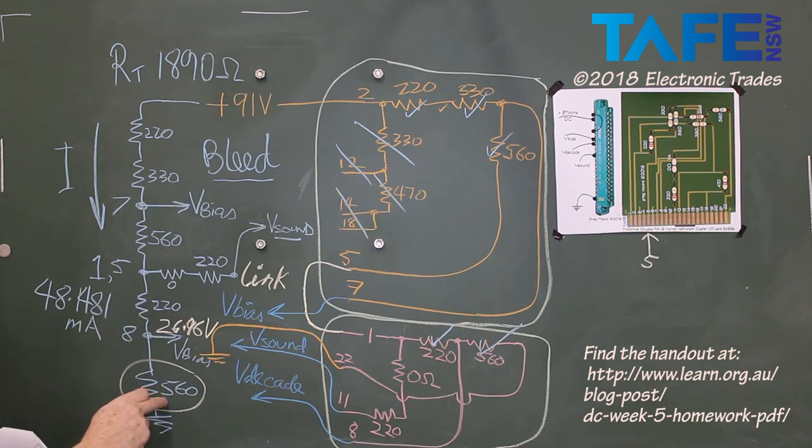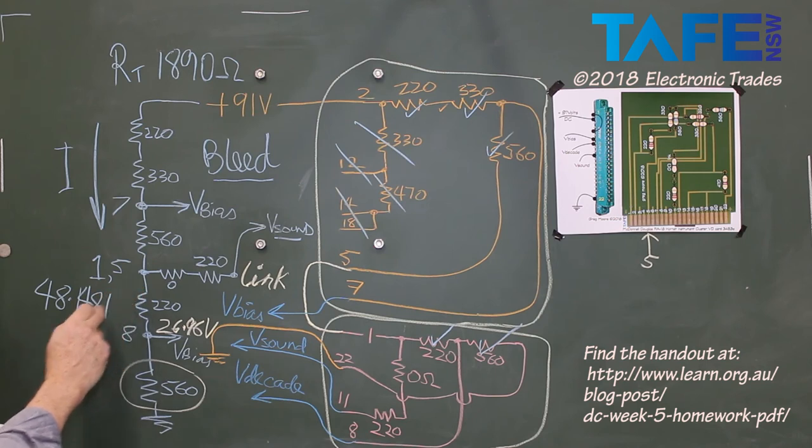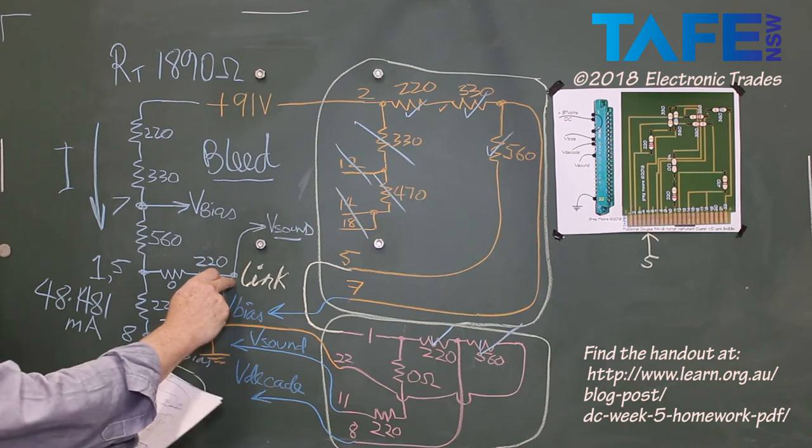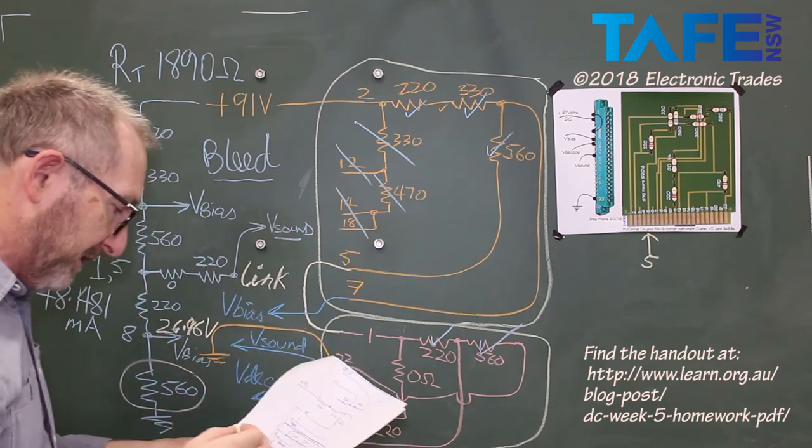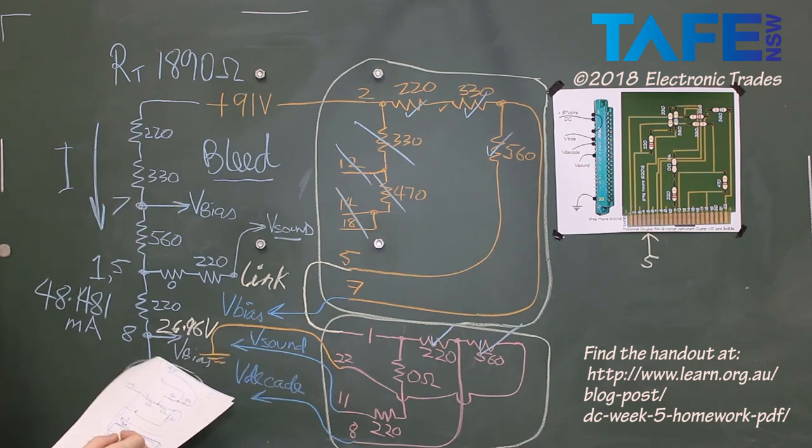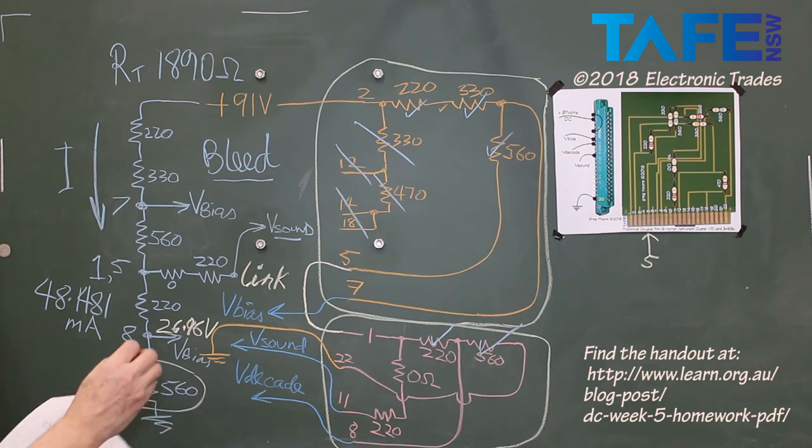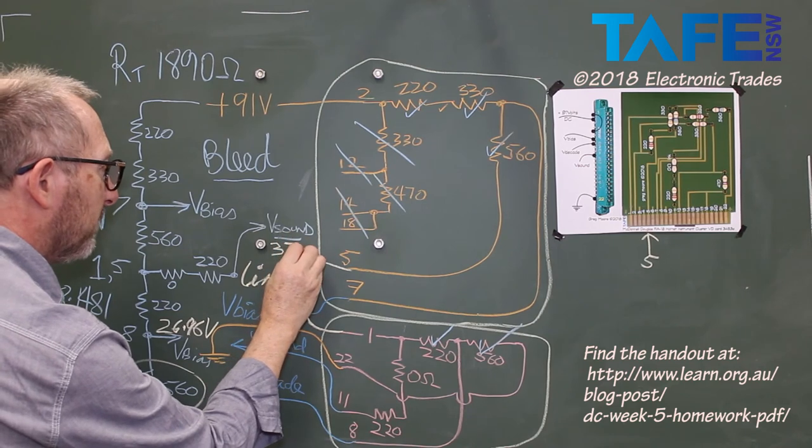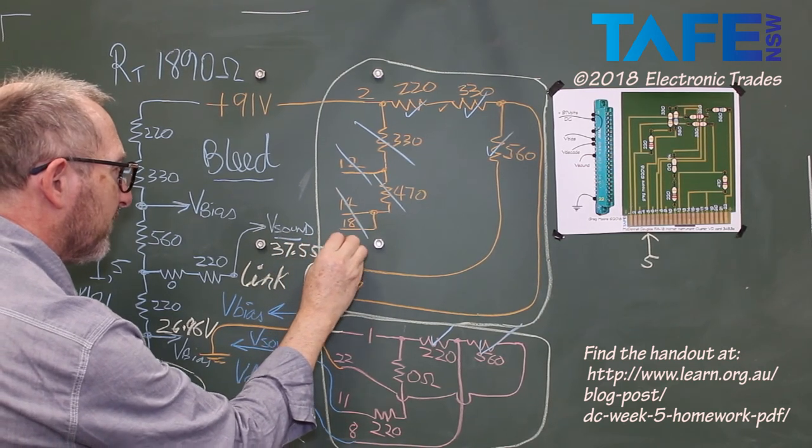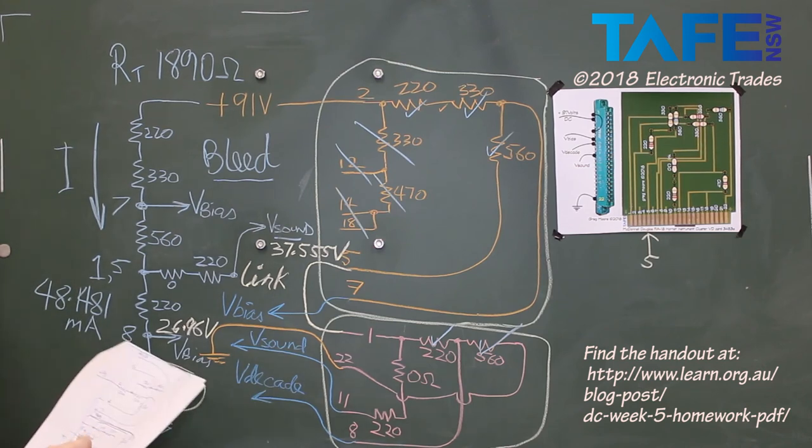And then when I want to work out this V-sound, all I have to do is add that 220 to that 560 to get 780 ohms. Multiply that by 780 ohms. That'll give me the voltage at that point there. These of course are unloaded voltages. Very, very easy to work out. So that V-sound worked out to be 780 times that 48.1481 milliamps, 37.555. 37.55 volts at that point there.